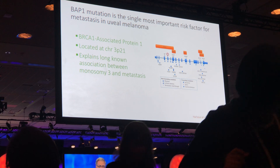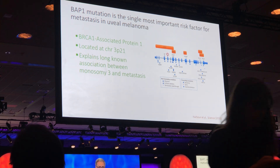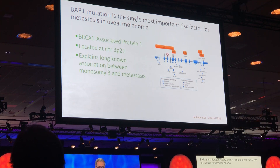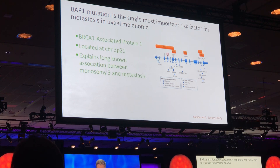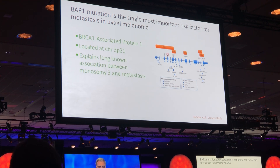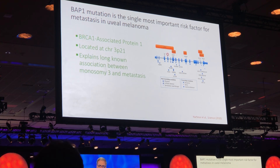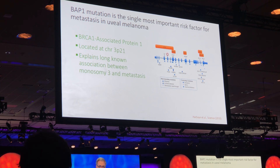What is BAP1? It is a complex gene that does many things. It's located on chromosome 3, and this accounts for the long-known association of monosomy 3 with poor outcome in uveal melanoma.